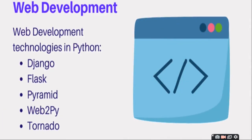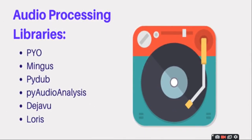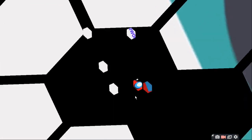Second is web development technologies in Python: Django, Flask, Pyramid, Web2Py, and Tornado. Third is the Audio Processing Library, which includes PyO, Mingus, Pydub, PyAudioAnalysis, DejaVu, and Loris — these are helpful for audio processing.